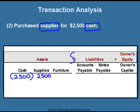When we check if the accounting equation is in balance, the left side has to equal the right side — assets must equal liabilities plus owner's equity. On the right side of this transaction, there are no liabilities and no owner's equity, so that side equals zero. On the left side, we have minus $2,500 and positive $2,500. When we add those together, we also get zero. So the accounting equation is still in balance.